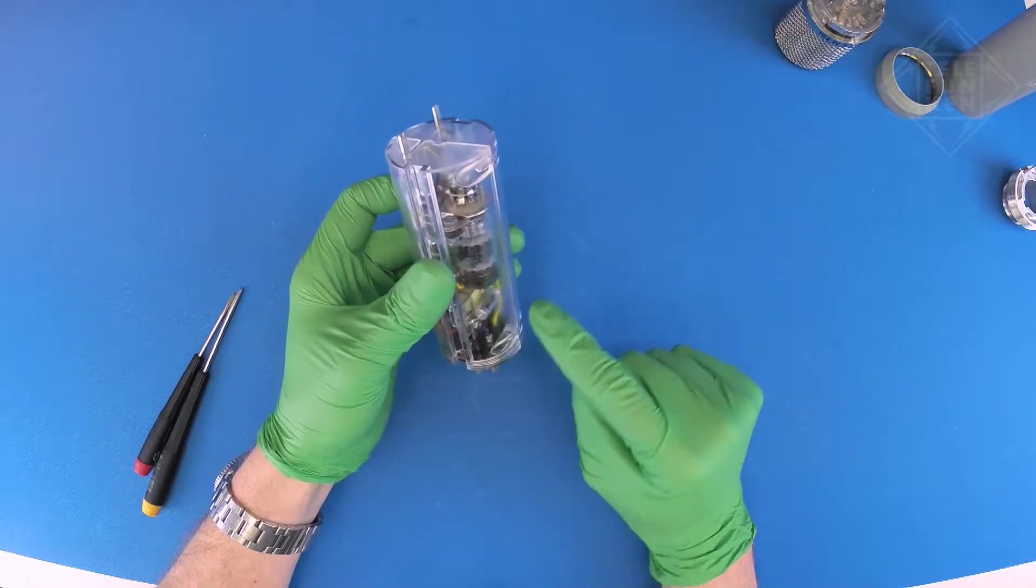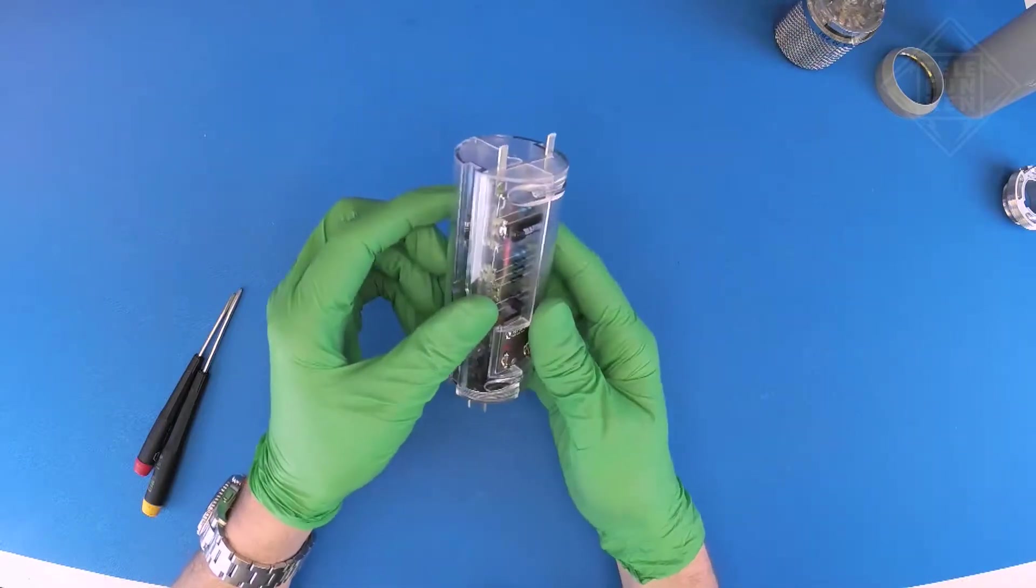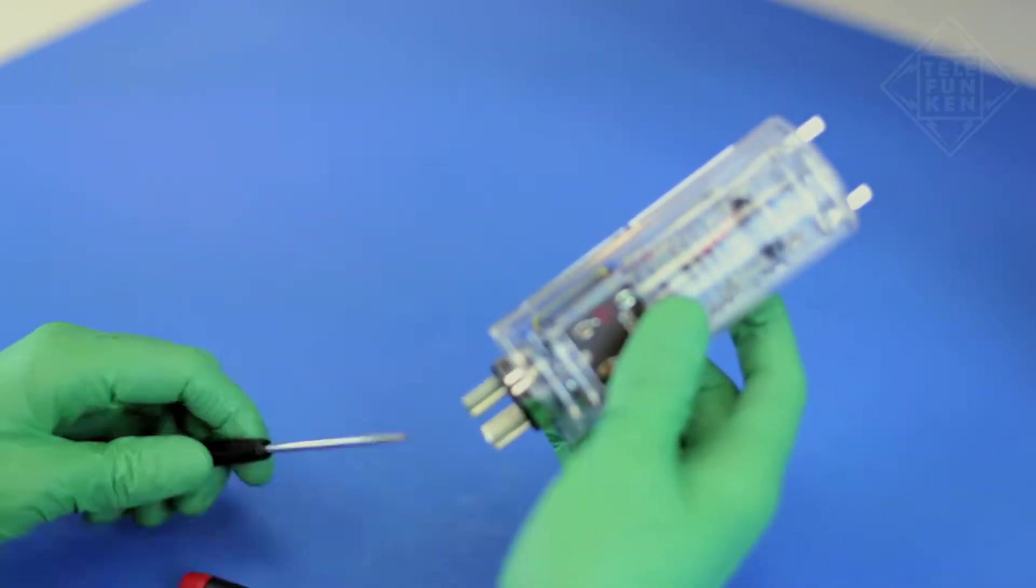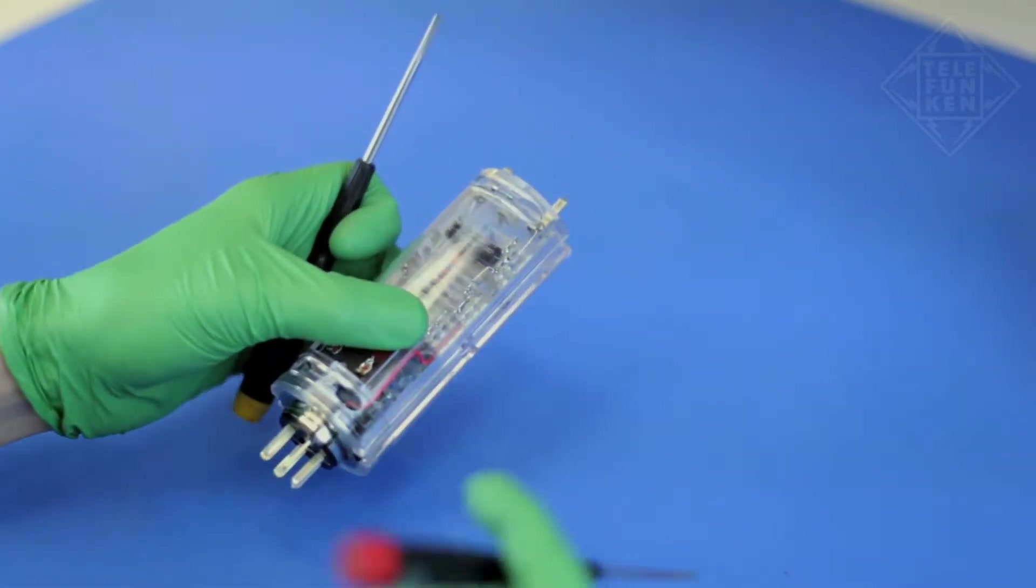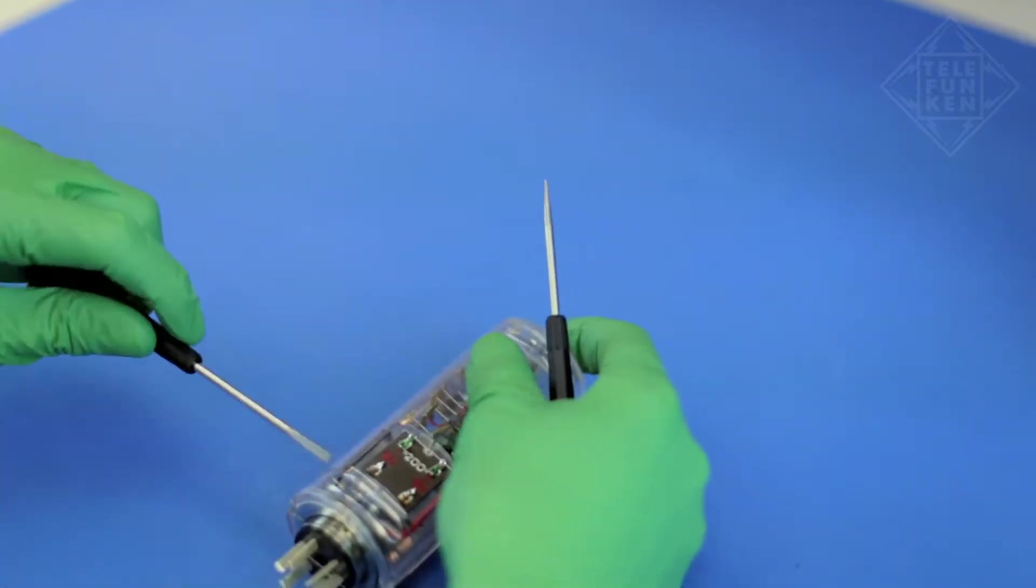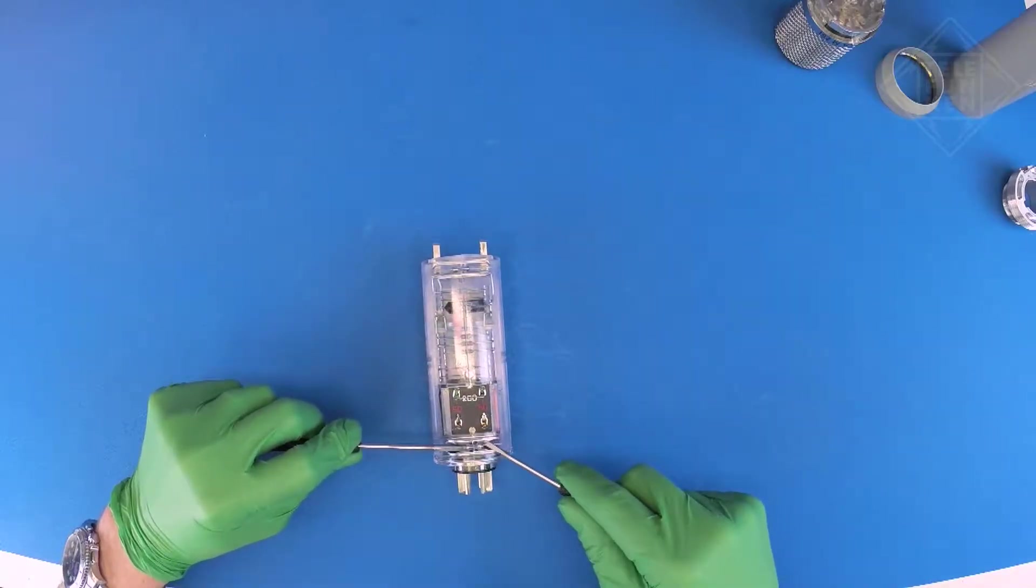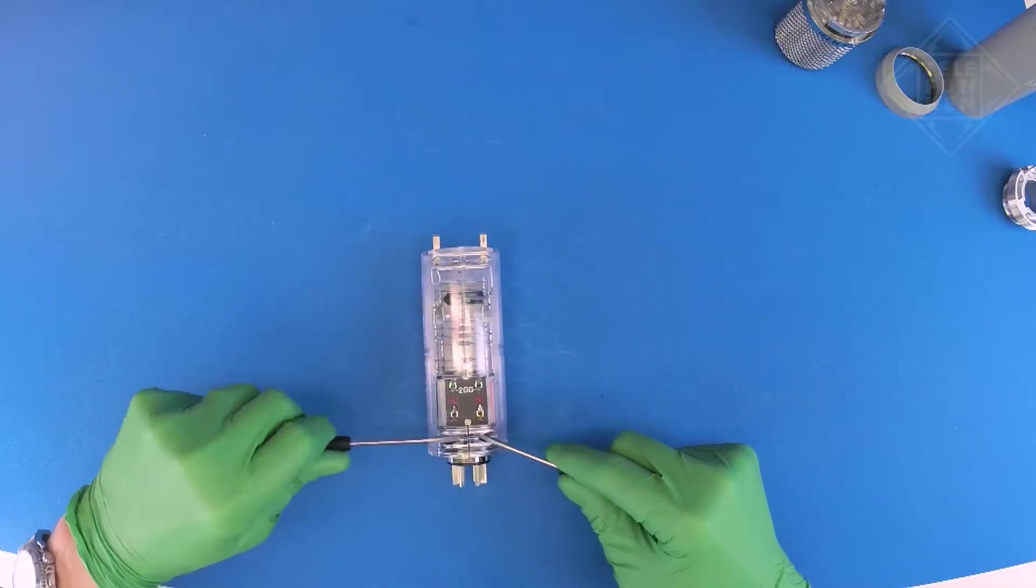Locate the four screws and nuts holding together the inner housing plastics. Use a flathead screwdriver to secure the nut while using another flathead screwdriver to loosen and remove each screw.